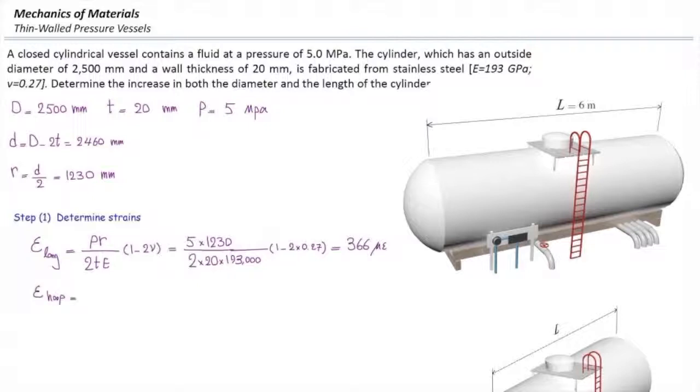In the hoop direction, remember this: for stresses, the hoop stress is twice the longitudinal stress. But that relationship doesn't exist for strains. It is not twice the strain in the longitudinal direction; we need to calculate it.